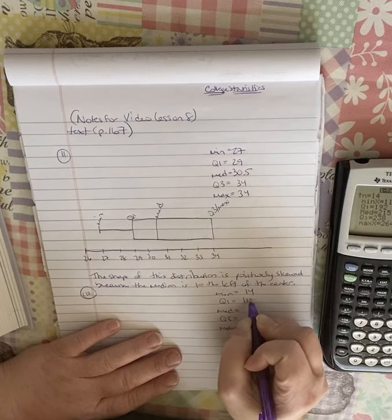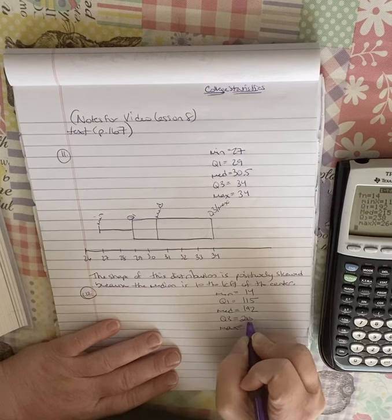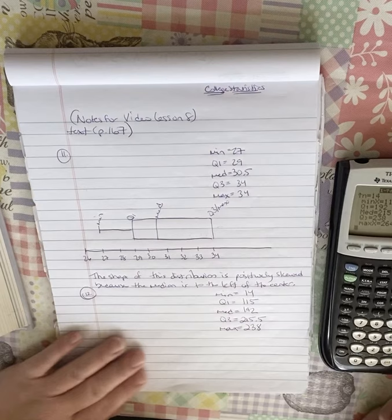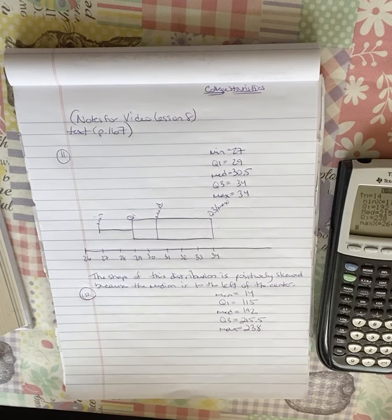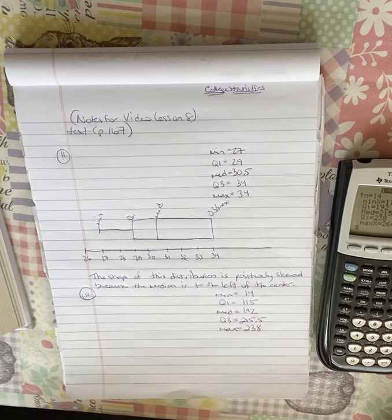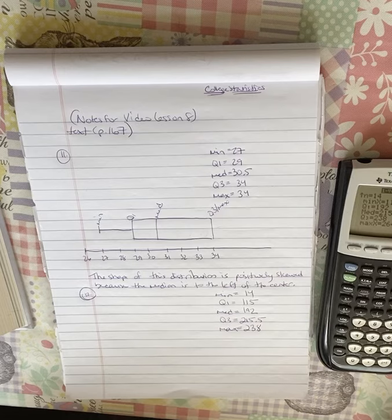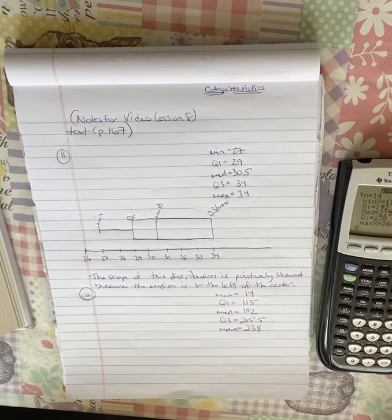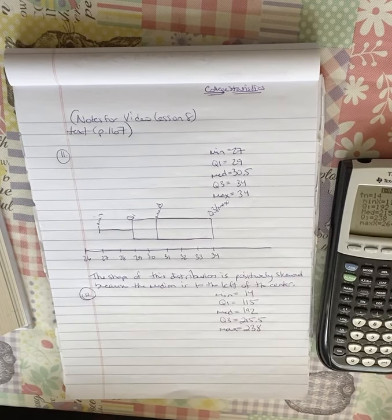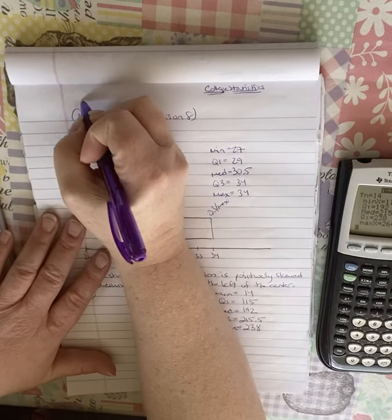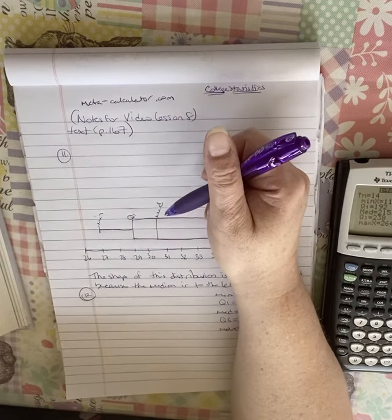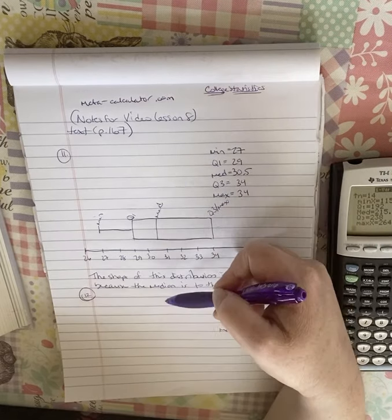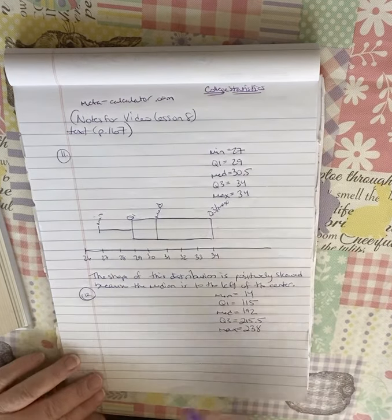All right, here we go. So I go stat, calc, one for fun. My L1 is already entered. And I scroll all the way down for my five-number summary. Yes, you have to write it. All right, so here we go. I have 14, 115, 192, 215.5, and 238. Now, some of you seem to be confused about certain things, and I can tell some of you are not watching the videos. How can I tell? Because it's a YouTube channel, so I get views. So if I have about 60 college statistics students and only 25 views on a video, I know a lot of you are submitting assignments without doing any of the video watching.